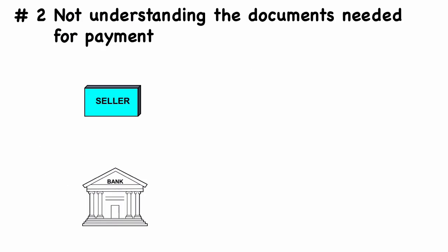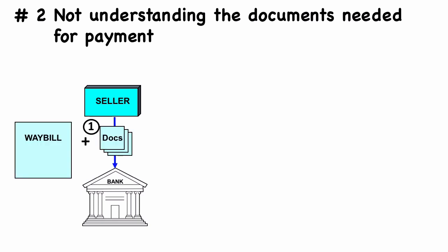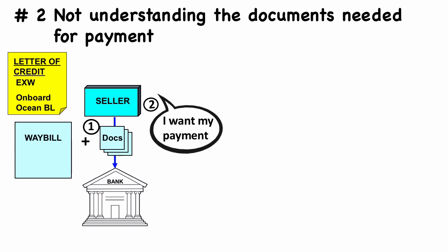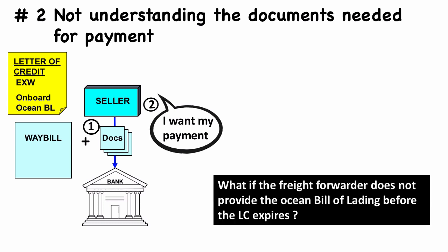The second example is not understanding the documents needed for payment. Another exporter came to the bank with documents in hand, expecting to collect payment immediately on his letter of credit. After a quick check of the documents, it was discovered he needed an on-board ocean bill of lading as specified in the letter of credit. However, he had presented a waybill issued by a trucking company. Although he correctly fulfilled his responsibility defined by EXW, he became alarmed to find that the buyer's freight forwarder could stop his ability to collect payment on the letter of credit — because what if the freight forwarder does not provide the ocean bill of lading before the LC expires?